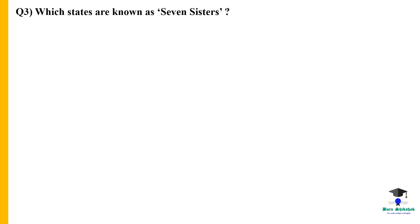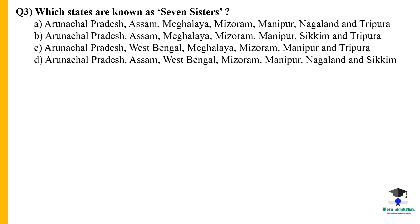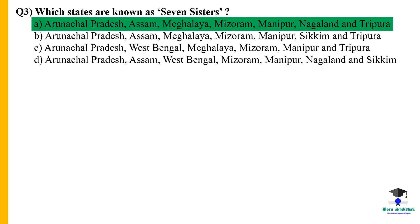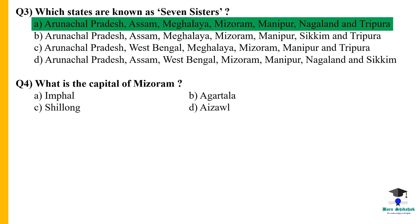Question 3: Which states are known as the Seven Sisters? The correct answer is Arunachal Pradesh, Assam, Meghalaya, Mizoram, Manipur, Nagaland, and Tripura. Question 4: What is the capital of Mizoram? The correct answer is Aizawl.